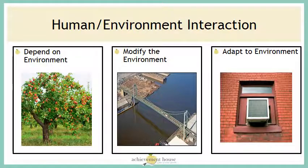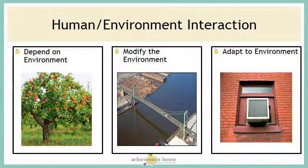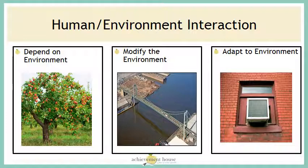And finally, adapting to our environment is finding ways to live comfortably within the environment we've chosen. For example, if we live in a hot location, we would want central air conditioning or an air conditioning window unit to cool our homes and make the environment more comfortable. The same would be for indoor heating — in the winter we turn our indoor heating on. It's a way that we adapt to live comfortably in our environment.